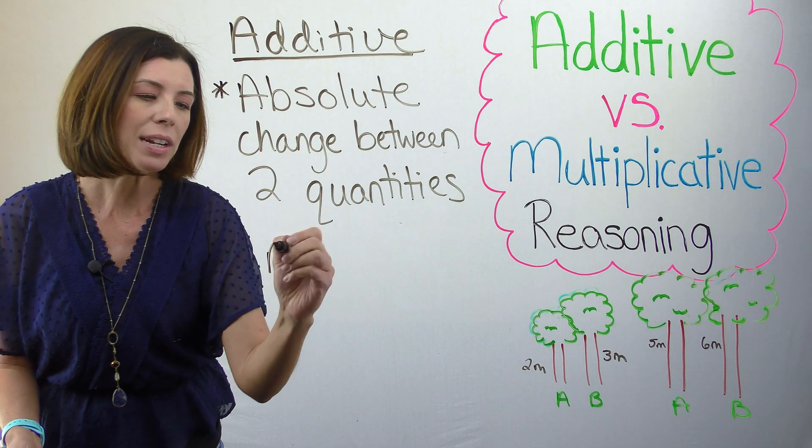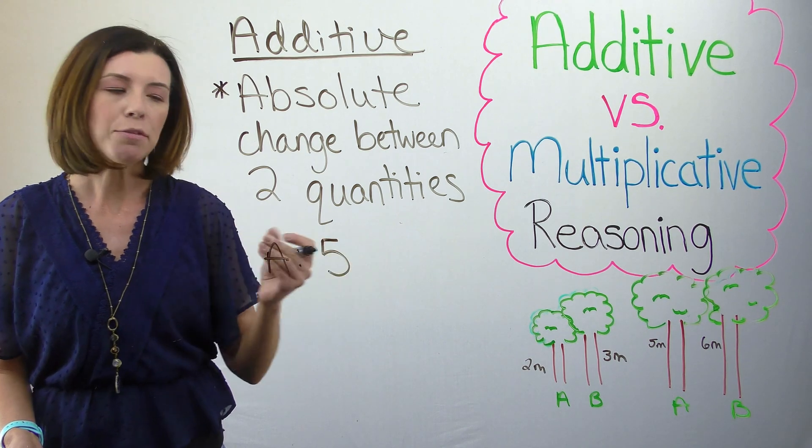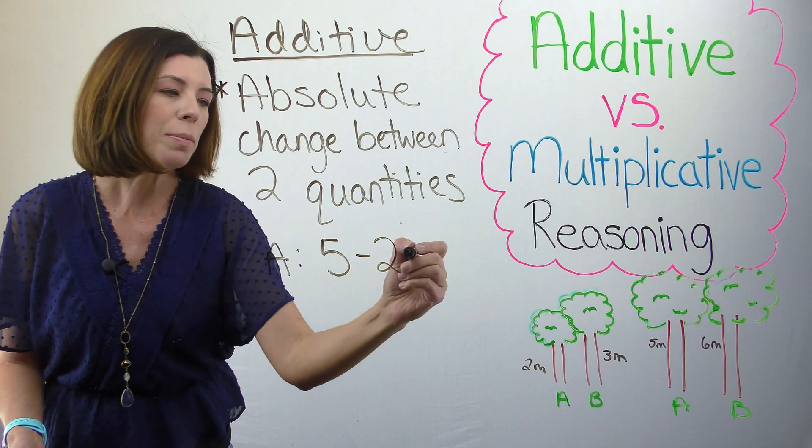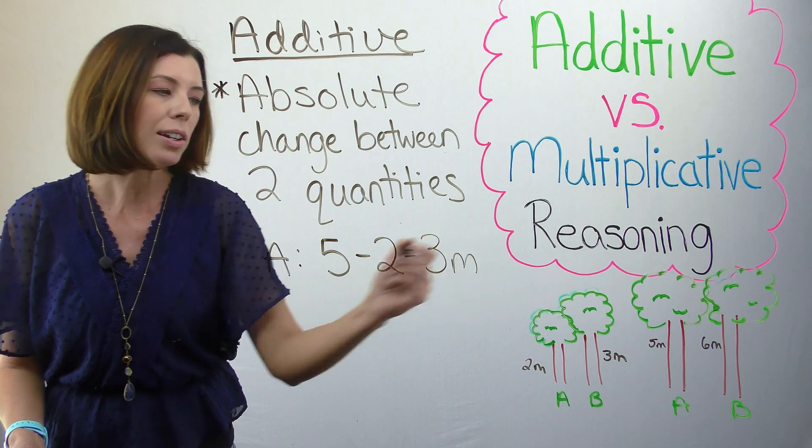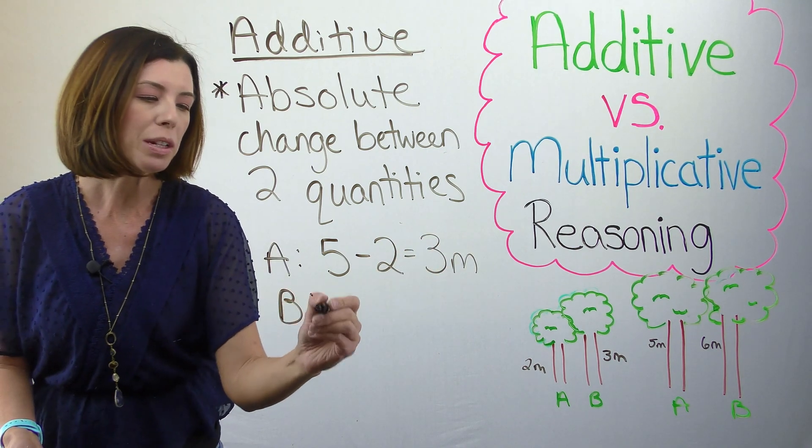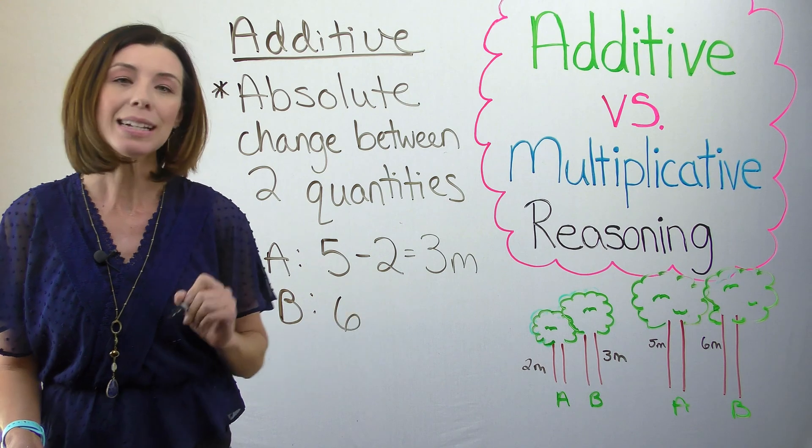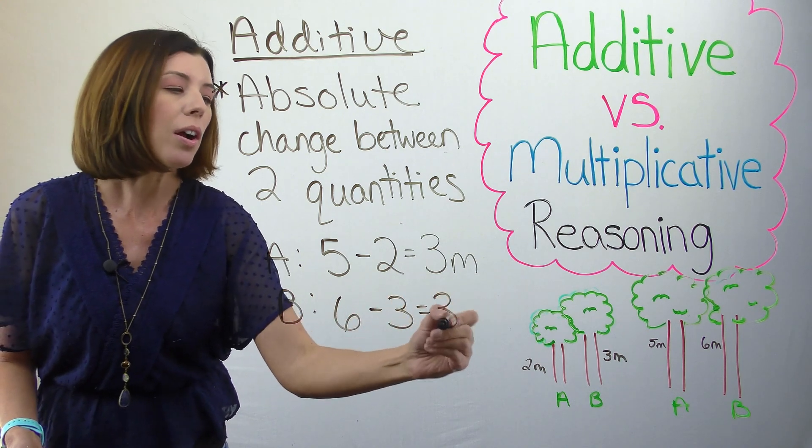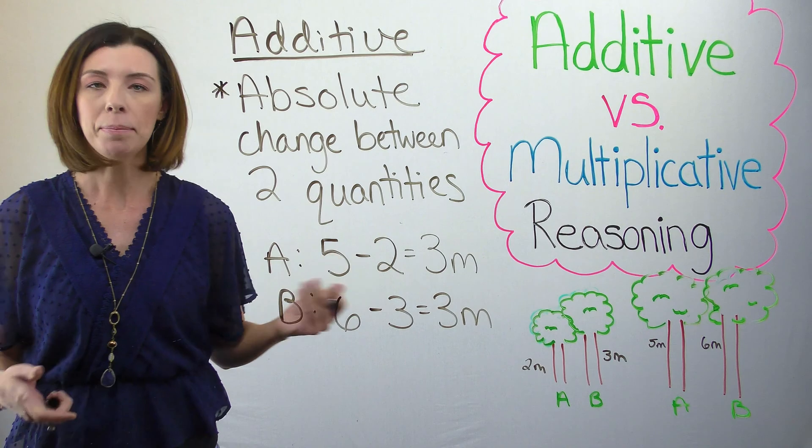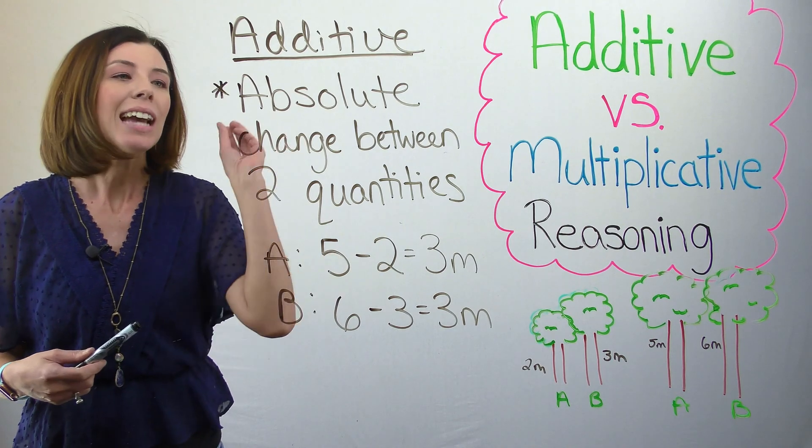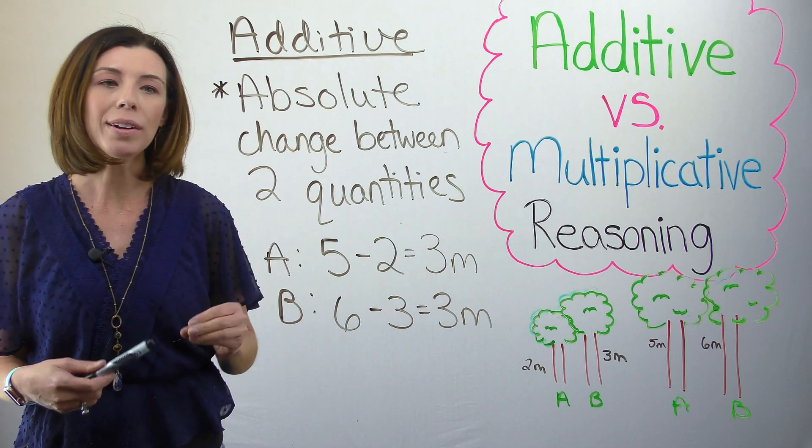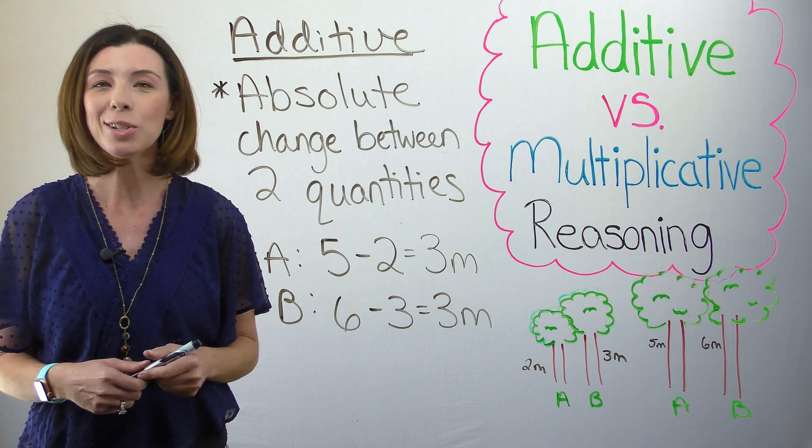I'm saying for tree A, if I ended at five meters and I started at two meters, it grew three meters. I can also think about tree B. It ended at six meters, it started at three meters, so it also grew three meters. Additive reasoning has the absolute change between two quantities, which means I'm going to need to subtract.